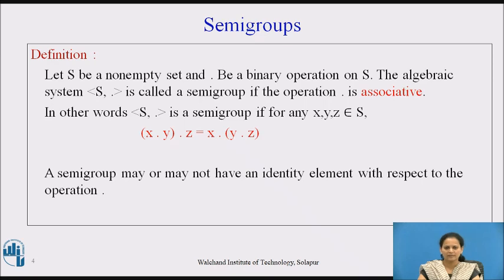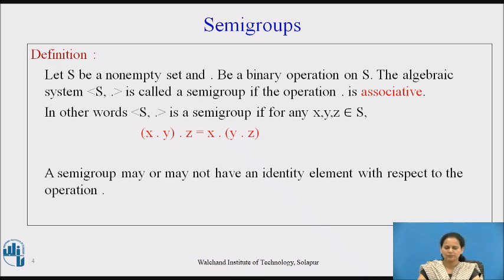So let's understand what is a semigroup. Let S be a nonempty set and dot be a binary operation on S. The algebraic system (S, dot) is called a semigroup if the operation dot is associative. In other words, (S, dot) is a semigroup if for any X, Y, Z which belongs to S, (X dot Y) dot Z is equal to X dot (Y dot Z), which is the property of associativity.